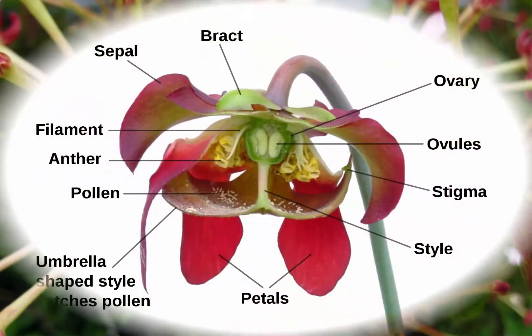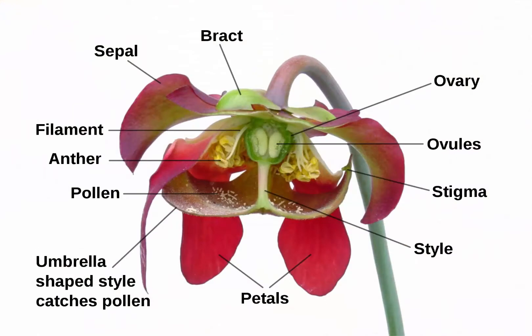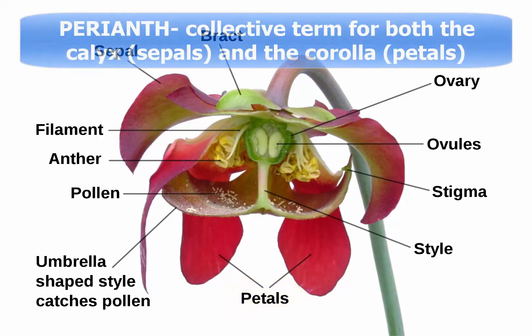The next whorl of flower parts is where everyone is most familiar with when we talk about flowers. These are the petals, collectively known as the corolla. They attract pollinators such as insects and birds. The calyx and the corolla together are referred to as the perianth.